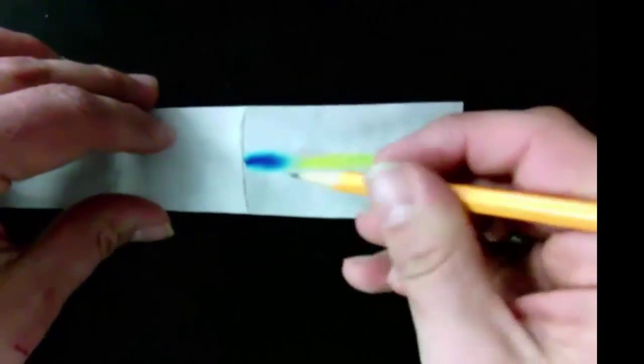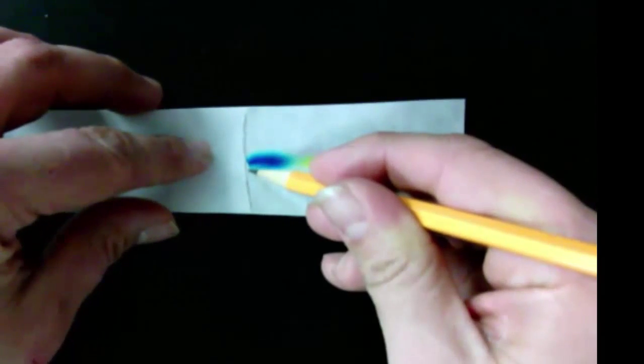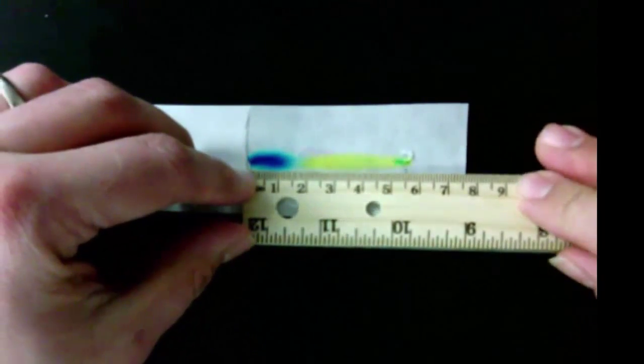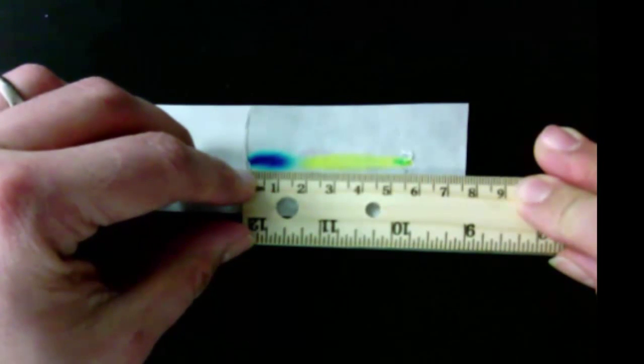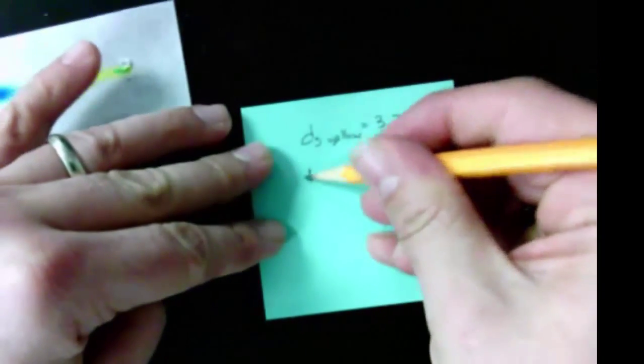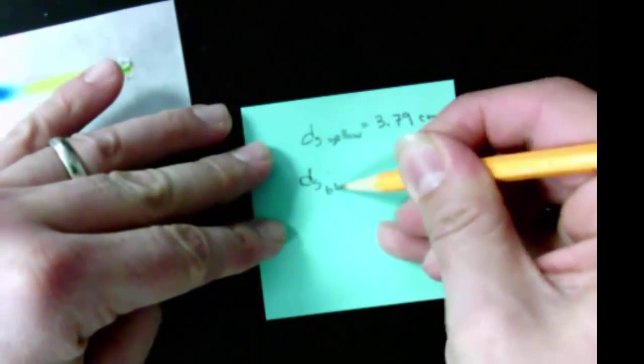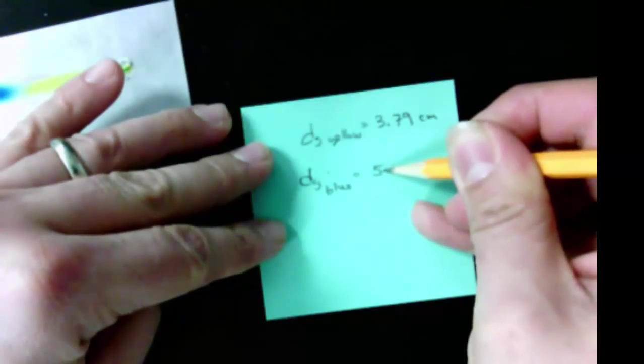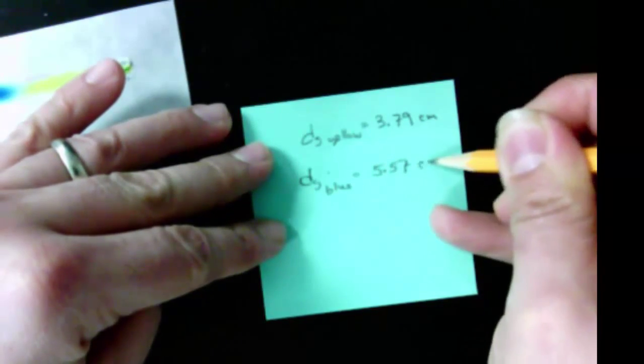Starting in the same position, and I'm going to stop up here where the blue ended. So we're going to say that that looks like it's about 5.57. I'm going to call that 5.57. That is the ds for the blue, that's 5.57 centimeters.